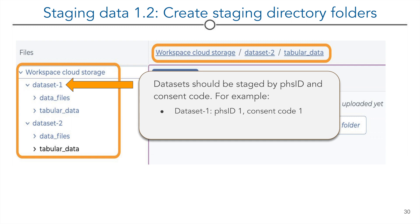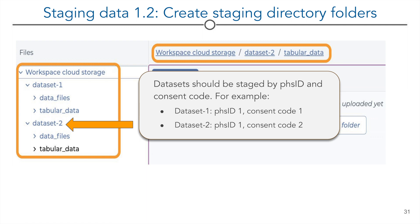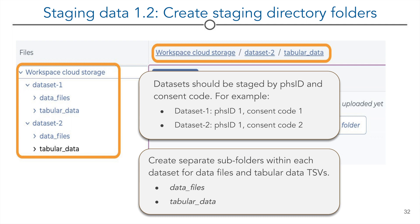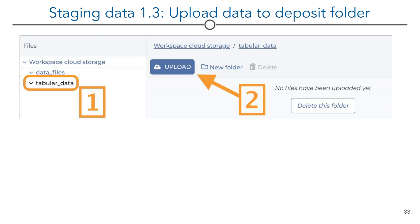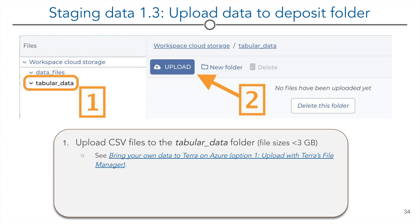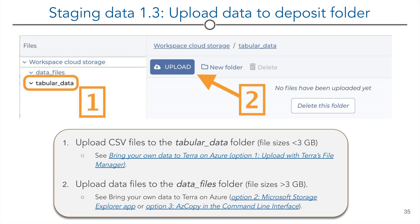Name the top-level folder as the FIS ID followed by the consent code. For instance, in this image, Dataset 1 corresponds to one FIS ID and one consent code. Within the same deposit workspace, Dataset 2 is a different consent code. Within each top-level folder, you'll create two separate subfolders: one for genomic data files — named 'data files' — and one for the tabular or metadata files, named 'tabular data.' Then you'll upload the files into the folders you created. You can upload smaller files right in Terra. For files greater than about 3 GB, use either the Microsoft Storage Explorer application or the AzCopy command in a command line interface. You'll find links to Terra support docs in the comments below the video.